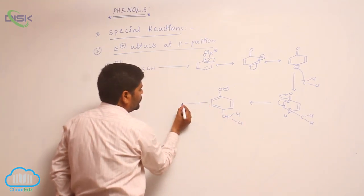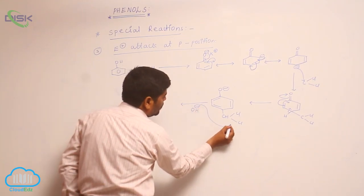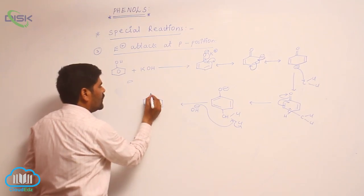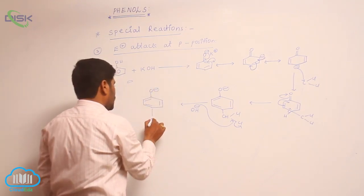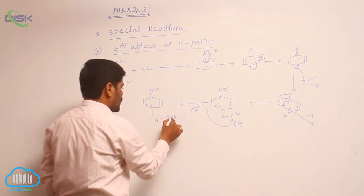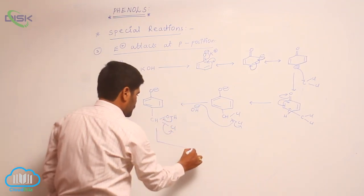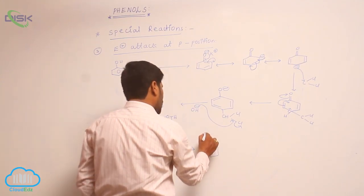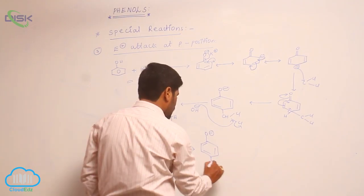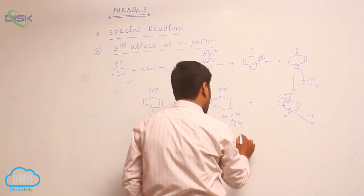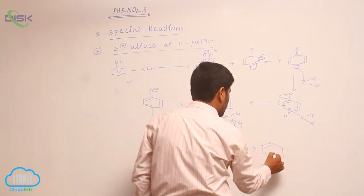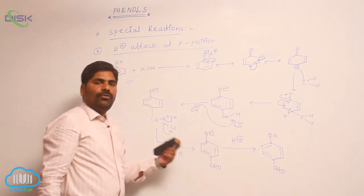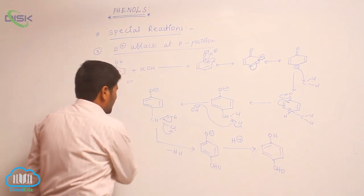The intermediate converts into double bond arrays with O minus, then CH–Cl. It reacts with a base, loss of Cl minus takes place, giving O minus, then CH–OH with Cl. Loss of hydrochloric acid follows, giving O minus with an aldehyde group. Addition of H plus gives the para-hydroxy benzaldehyde product. This completes the para-position attack mechanism.